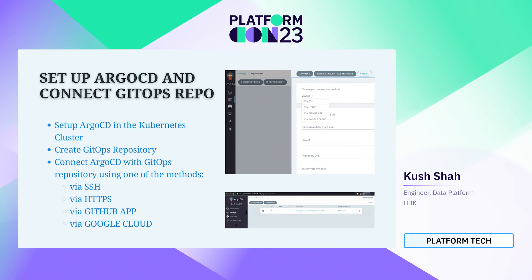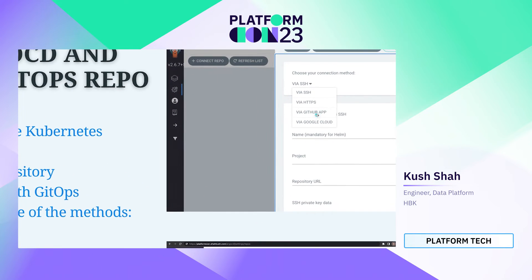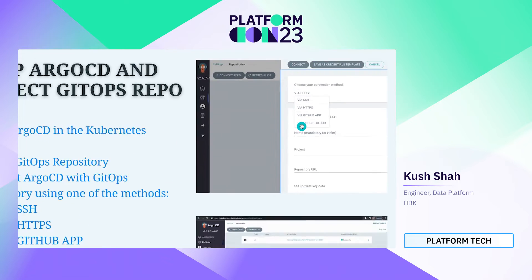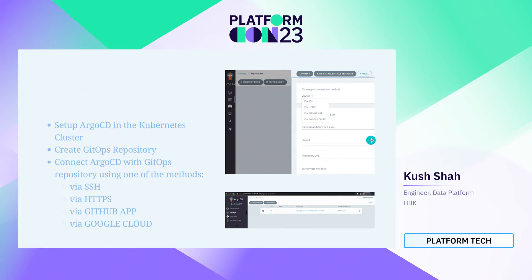Once we set up Kubernetes, we need to set up ArgoCD and create a GitHub repo. To connect them, there are two ways: either via the ArgoCD UI or by creating a manifest file. If you connect via the ArgoCD UI, you can use SSH, HTTPS, a GitHub application, or Google Cloud.